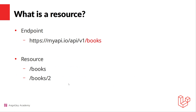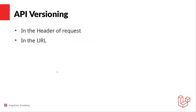What is a resource? Let's say we have an endpoint like HTTP myAPI.io/api/v1/books — the 'books' part is the resource that we expose at the endpoint. This could be articles, tickets, users, or whatever the case may be. A resource should be plural, but if you make it singular that's okay — just stay consistent. A collection of a resource looks like '/books', and an instance of a resource looks like '/books/2'.